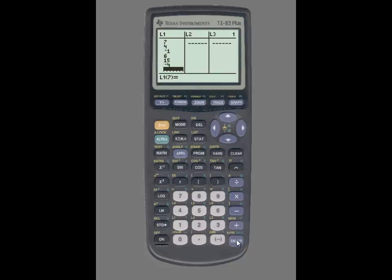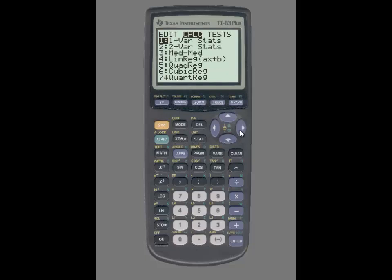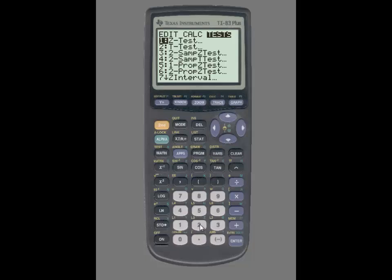Press STAT, use the right arrow key to highlight TESTS, and select number two for a t-test. Since we have the data entered into a list, I'm going to make sure that Data is highlighted. The null hypothesis for this example is zero, and my list is L1.